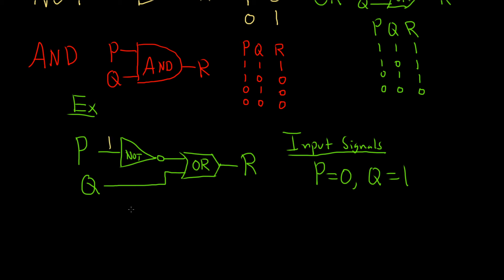So to do this, you just work left to right. So P is zero and Q is one. So zero goes into the NOT gate. So that gets negated, so it turns into a one. And now you have two ones going into the OR gate. So whenever you have two ones going into the OR gate, you know the result is always one. So it's one. So the output signal is R equals one. So really simple example of how it works. You just work left to right, you plug in these inputs, and you get an output.